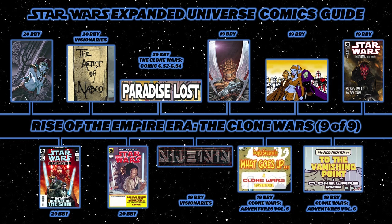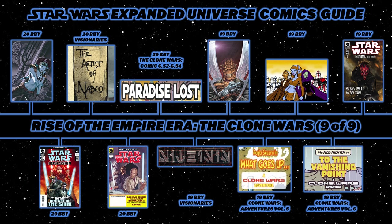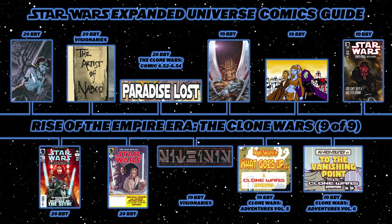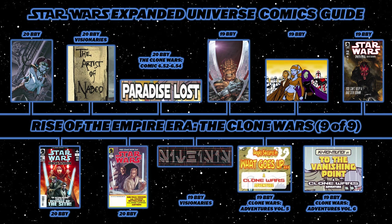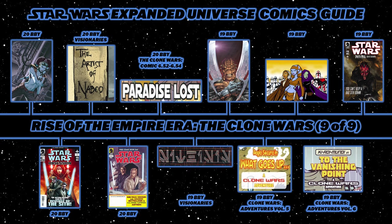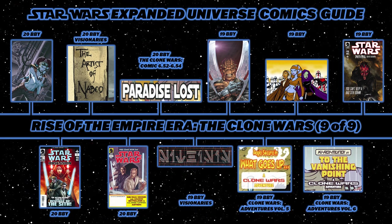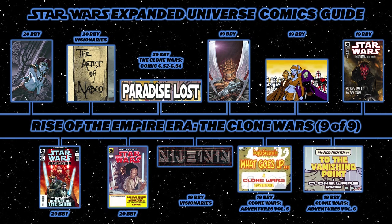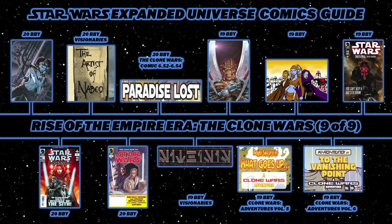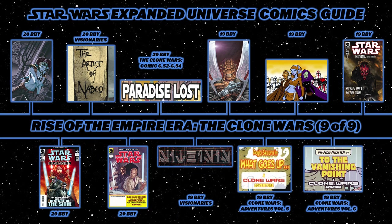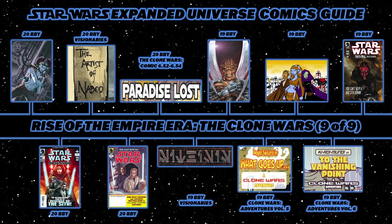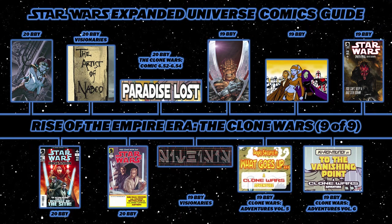Then a series of daily web strips published on Hyperspace — the official Star Wars fan club website — titled Reversal of Fortune, set during the last days of the Clone Wars, containing 169 strips. Then one more Clone Wars Adventures story from Volume 6: To the Vanishing Point, starring Ki-Adi-Mundi. And then the only Star Wars story that is both canon and Legends: Darth Maul — Son of Dathomir, a miniseries showing Darth Maul being rescued by Death Watch from his capture by Darth Sidious at the end of Clone Wars Season 5.